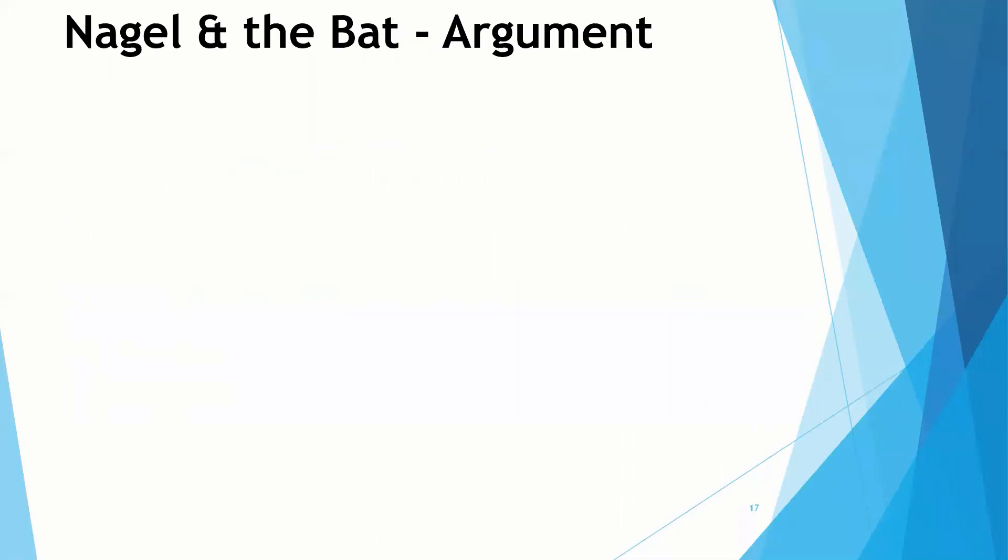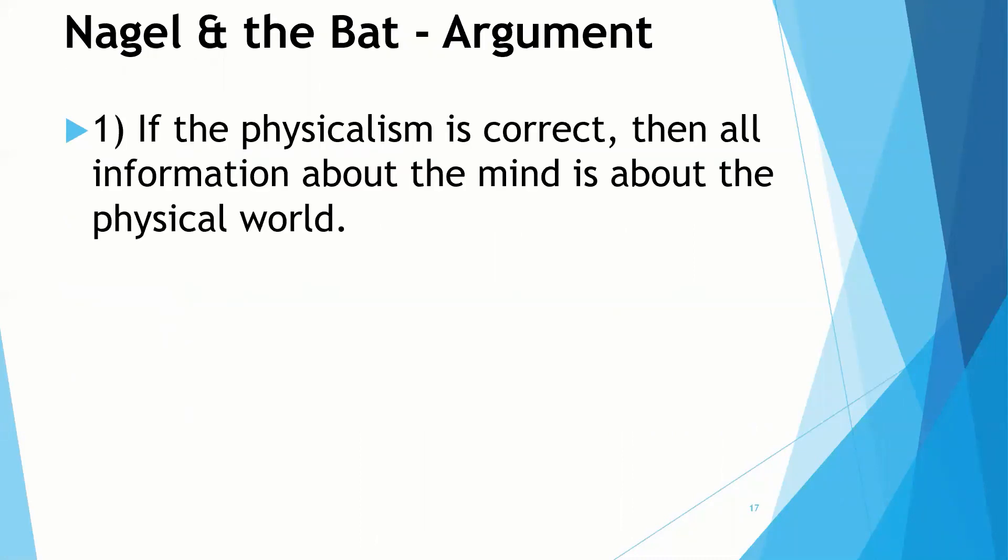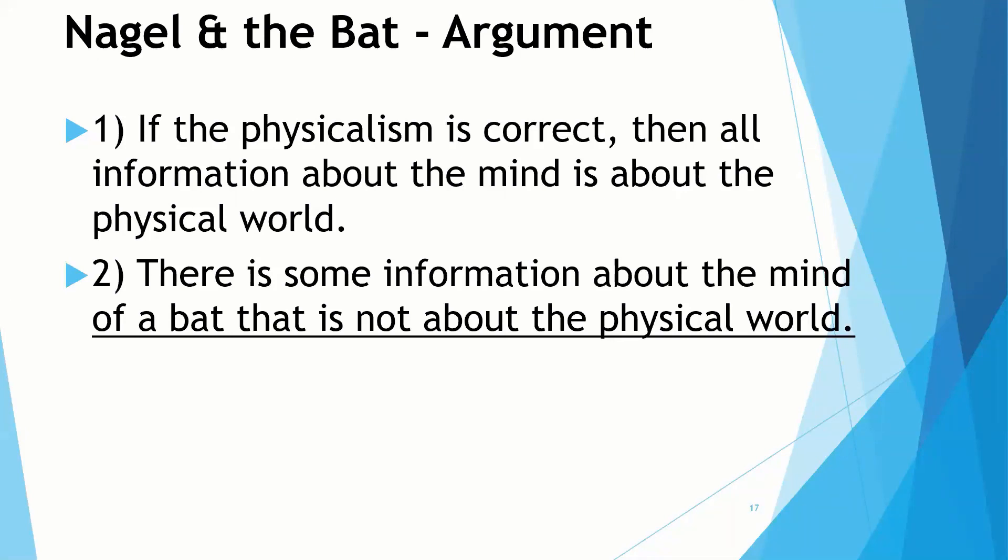Let's put this in an argument form. If physicalism is correct, if that theory is correct and functionalism is one version of physicalism, then that would mean that all the information about the mind is about the physical world. It has to be. If that's all there is, are physical things, then everything we know about the mind is about the physical world. However, there is some information about the mind of a bat, for example, that's not about the physical world. This omniscient chiroptologist doesn't know what it's like to be a bat, doesn't know what it's like to get around by echolocation. So that means that physicalism in general is incorrect.